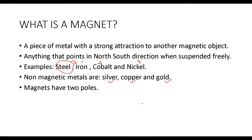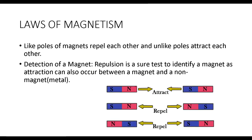Each magnet has two poles — the north pole and the south pole. Both of these poles are opposite poles, and they give the magnet its properties. When you bring the north pole of one magnet close to the south pole of another magnet, attraction will occur because unlike or opposite poles will always attract, and like poles or same poles will always repel each other.